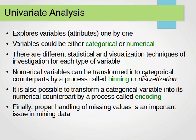We can also transform between variable types. Numerical variables can be transformed into categorical counterparts by a process called binning or discretization. Conversely, we can transform categorical variables into numerical variables using a process called encoding.